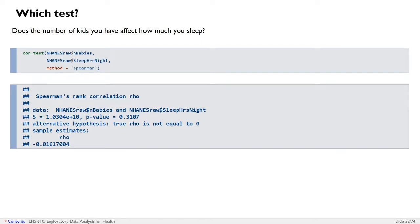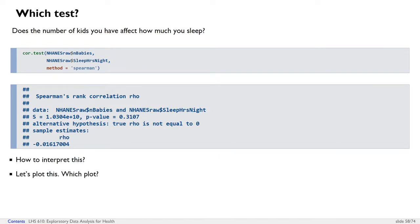Given that number of babies was not normally distributed, we chose to run a Spearman test rather than a Pearson test. Both are run using the cor.test function — you test a correlation and specify the method. The default method is Pearson, so if you want Spearman, you must specify method equals Spearman. We get a value for rho, which tells us the strength of the correlation, and a p-value of 0.31.